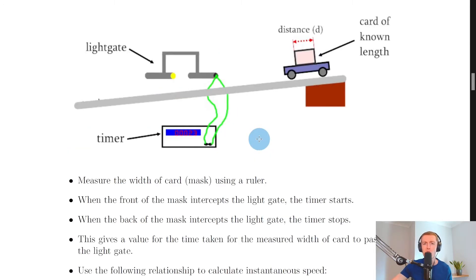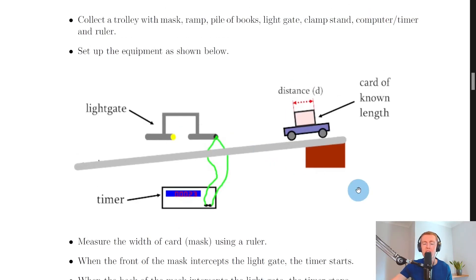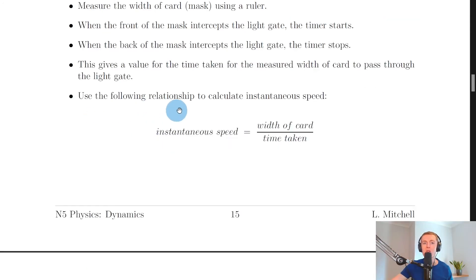It's going to be a very short time because we're not looking at the time taken for the trolley to move between two light gates. We're looking at the time taken for this short length of card to cut through the light gate, and we can then use the following relationship to calculate instantaneous speed.